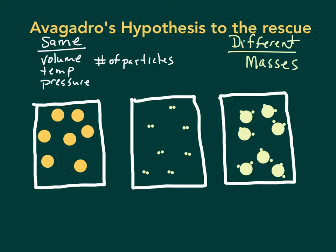That's where we have Avogadro's hypothesis coming to the rescue. In Avogadro's hypothesis, when we're comparing gases, if we have the same volume, temperature, pressure, then we have the same number of particles. Because the song goes, equal volumes of gases at the same temp and pressure have the same number of molecules. Amadeo Avogadro, that's his hypothesis.